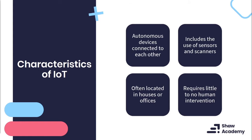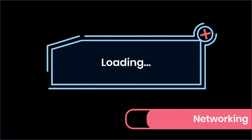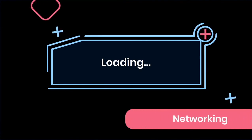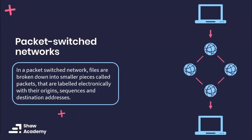Now that we have a somewhat basic understanding of the internet, let's move over to our very next topic, which is networking. Here we'll cover the basics as well as some intermediate concepts. Our very first topic under networking is packet switch networks. Essentially, in a packet switch network, files are broken down into small pieces or chunks, and these packets are labeled electronically with the origin, sequence, and destination address over a network — hence the name packet switch network.